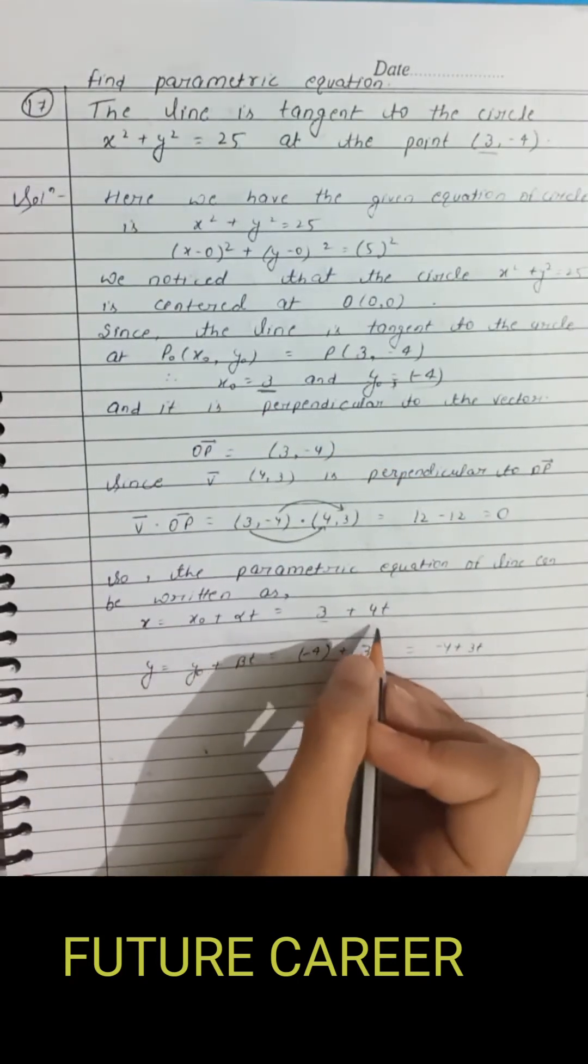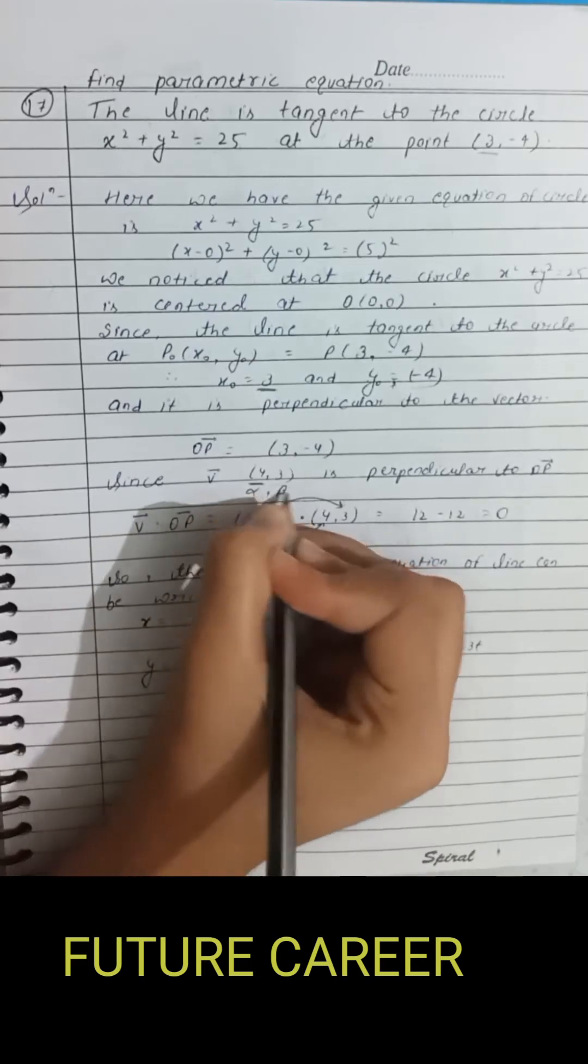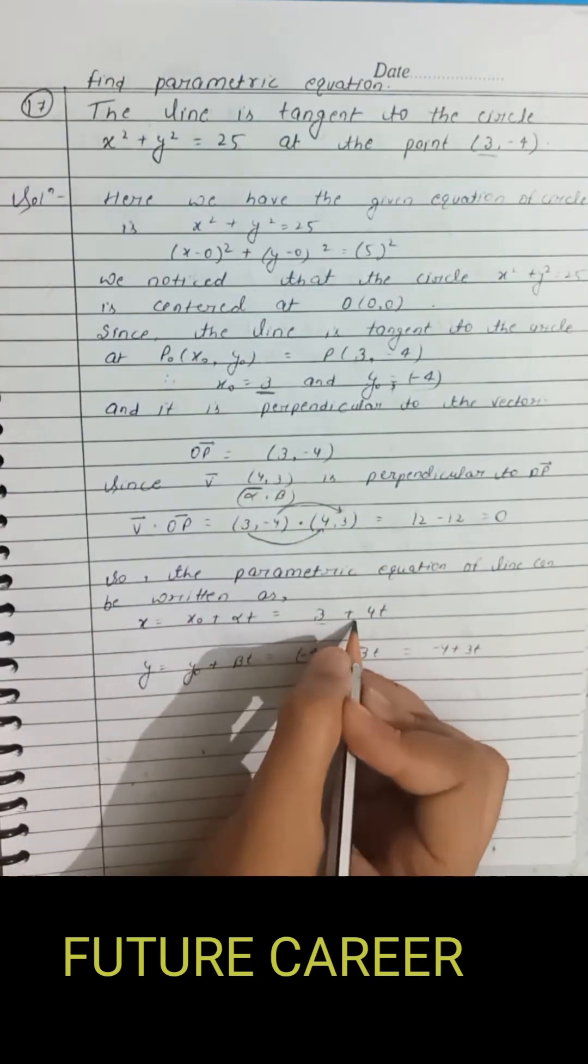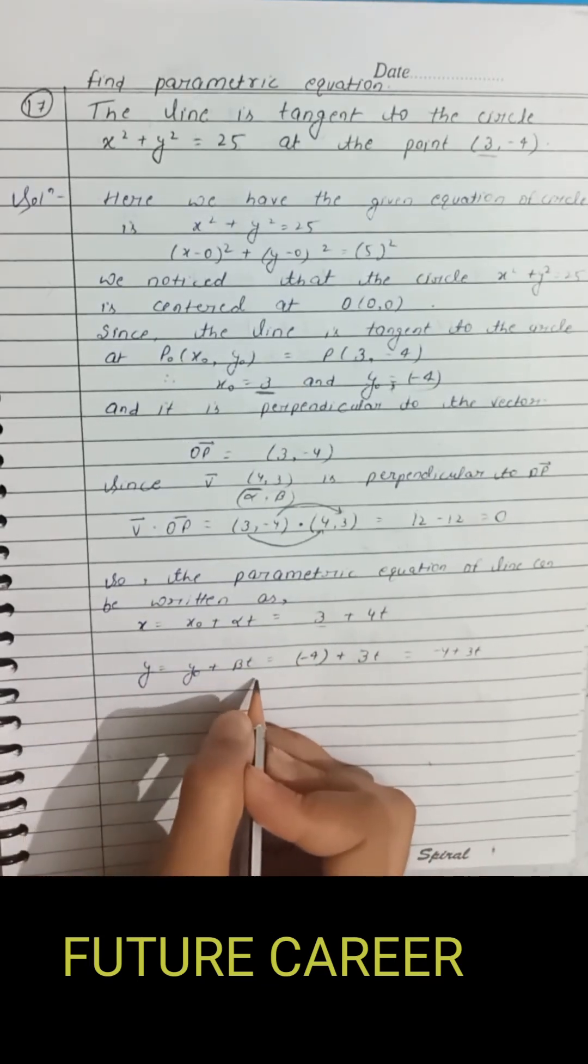And alpha is equals to 4, so x equals 3 plus 4t. And y equals y naught plus beta t.